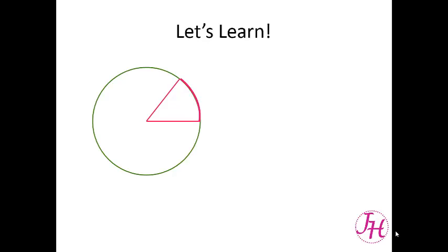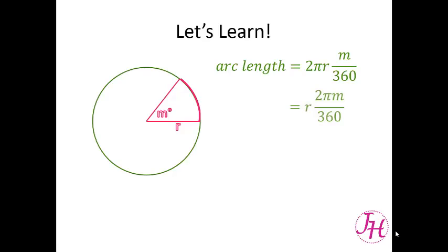In this circle we have an arc created by two radii. The radius is labeled r and the measure of the central angle that opens up to this arc is m degrees. Our arc length is 2πr times the number of degrees over 360. We can rearrange that so it's r times 2πm over 360, and when we simplify we get r times πm over 180.